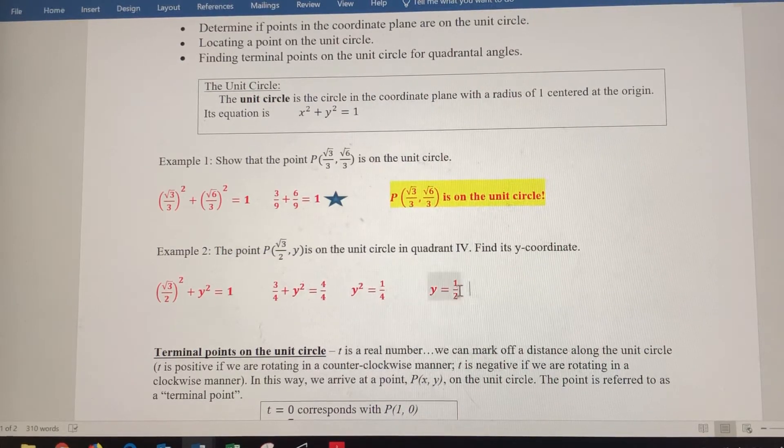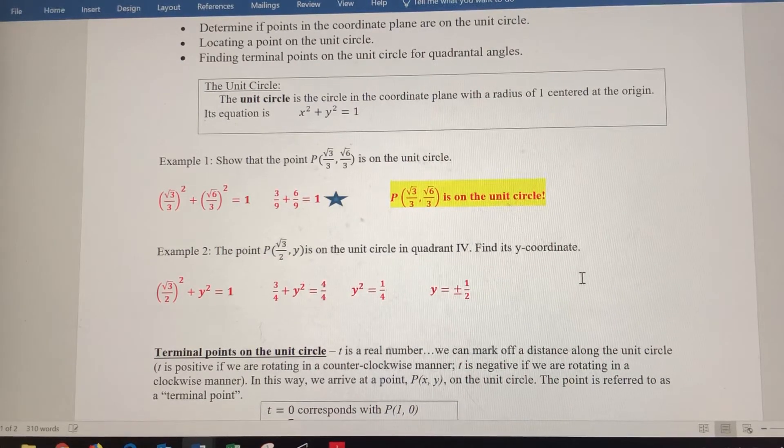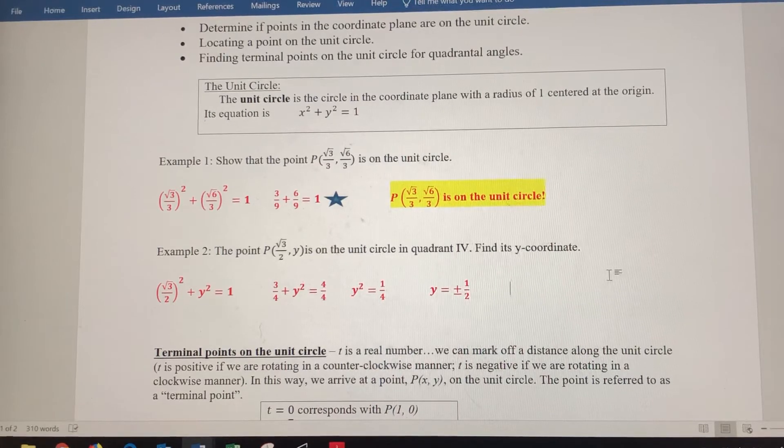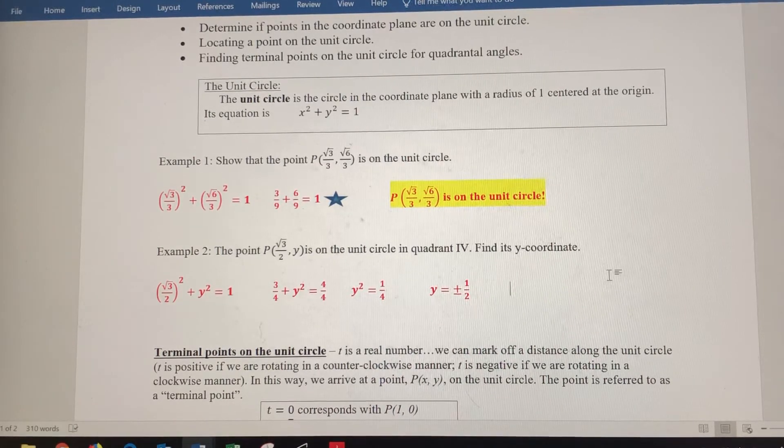But remember, with the square root here, that 1-half could be either a positive or a negative. So we want to put that plus or minus sign in there.